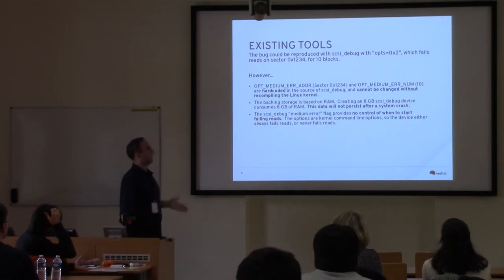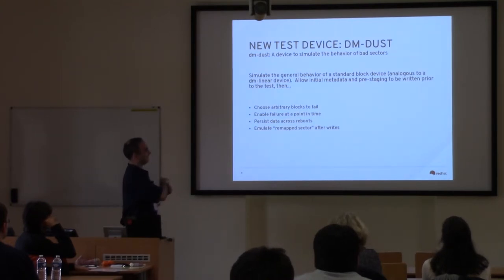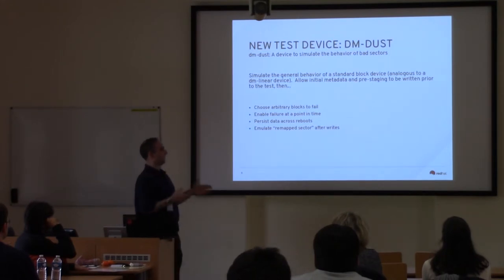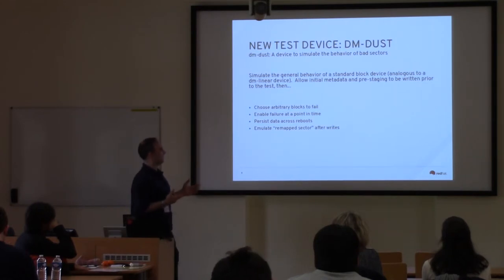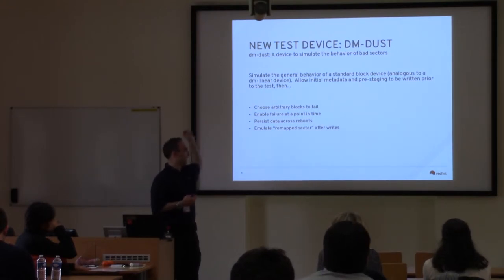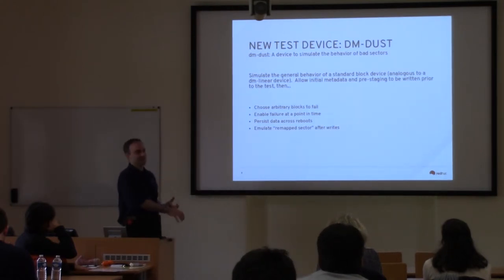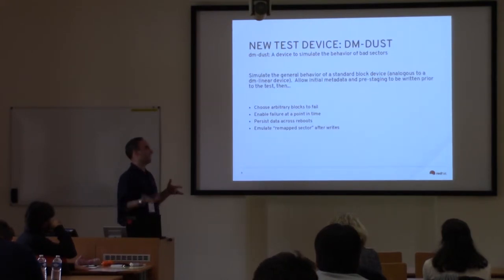So I thought: how would I improve on that? I used the FUA target from before, which is relatively simple, and started creating an idea for a device that simulated bad sector behavior. The general goals were: choose arbitrary blocks to fail, enable that at a point in time, persist data across reboots, emulate remap sector after writes, and also not have to change the table — which may or may not change elements of the test.